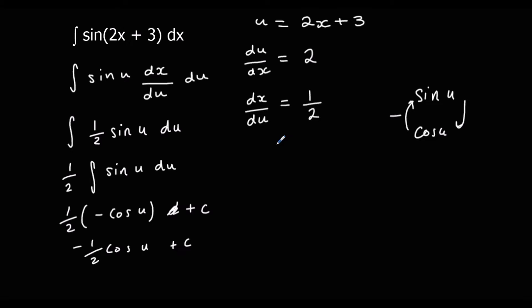And we can change our u back to 2x plus 3, so that would be negative one half cos(2x plus 3) plus c.